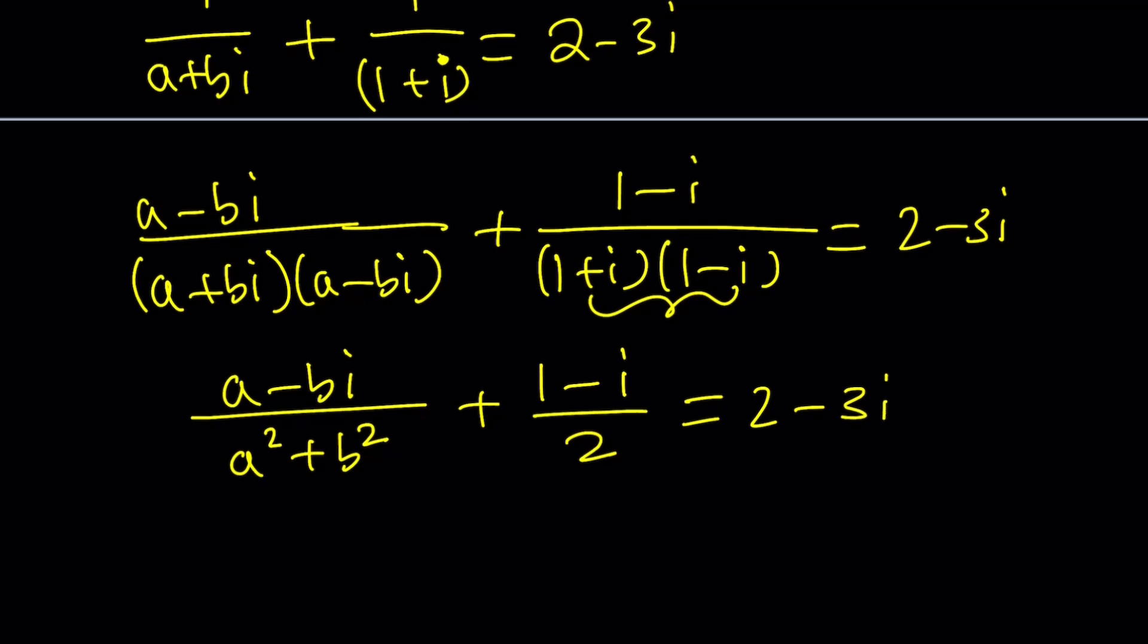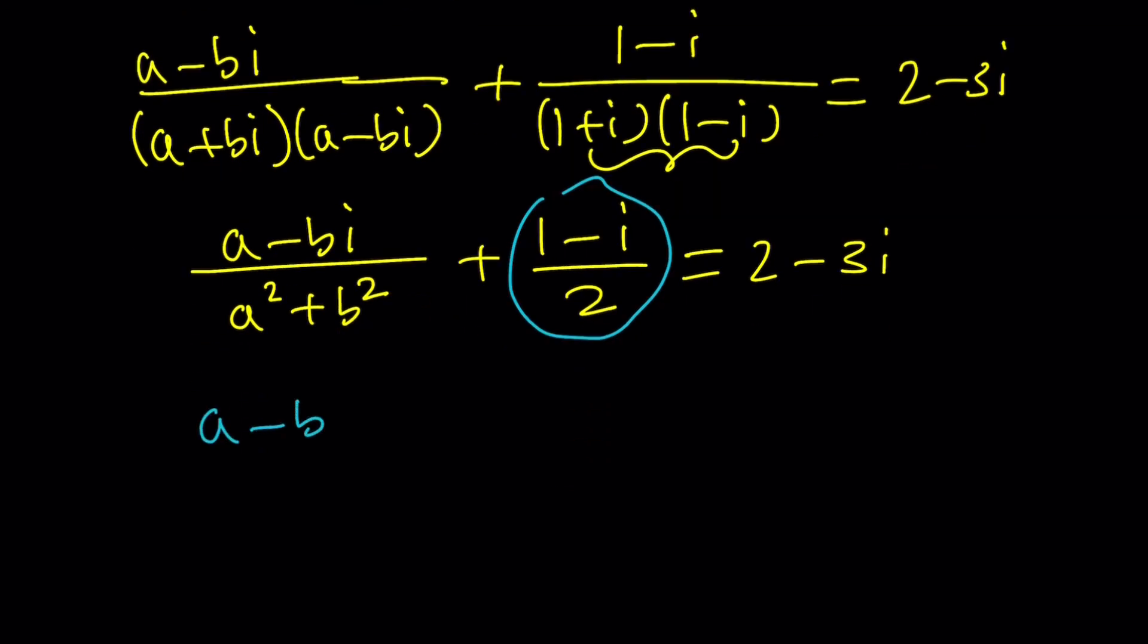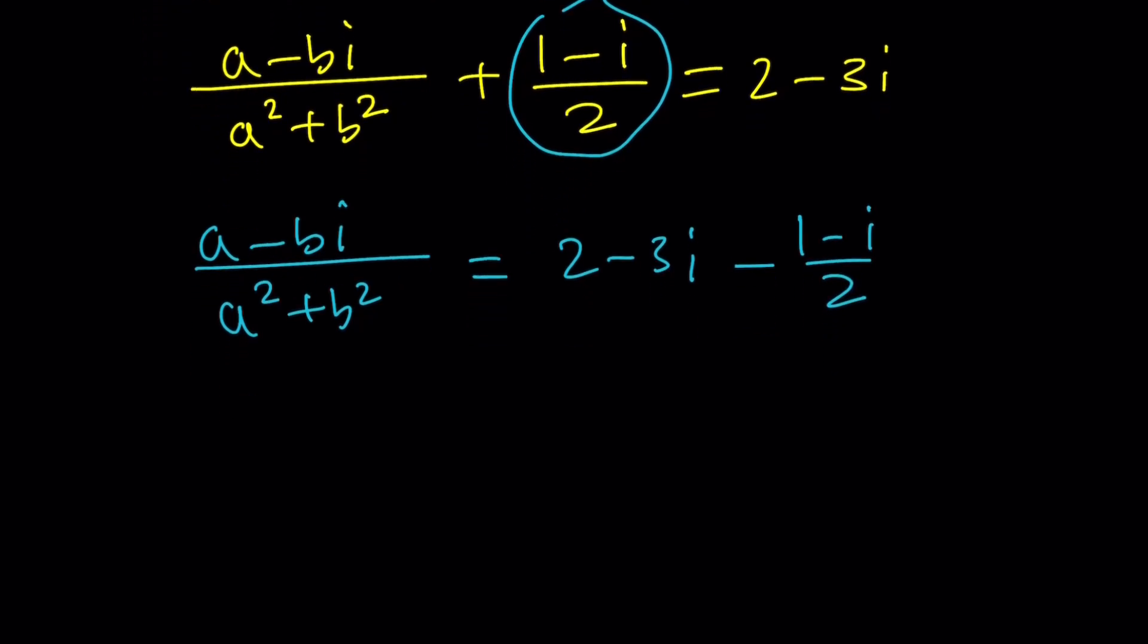Now one of the things that will be very meaningful at this point is to isolate the A minus BI term. So let's go ahead and subtract this from both sides. You don't have to do it that way but I think it's better. So let's subtract 1 minus I over 2. Now at this point you can make a common denominator. So we're going to multiply 2 minus 3I by 2 to make a common denominator and we'll subtract 1 minus I. Notice that there is a negation here so it's going to change the sign.